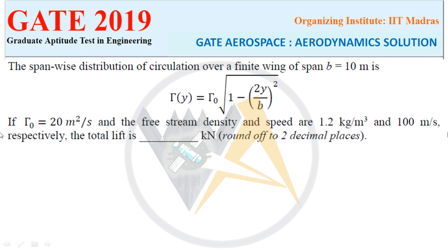Next question: the span-wise distribution of circulation over a finite wing of span b = 10 m follows an elliptical distribution with Γ0 = 20 m²/s. The free stream density and speed are 1.2 kg/m³ and 100 m/s respectively. Find the total lift in kilonewtons, rounded to two decimal places.